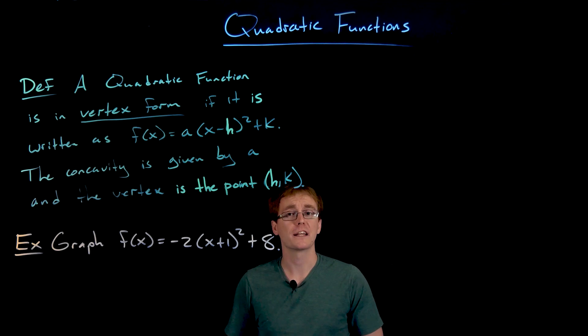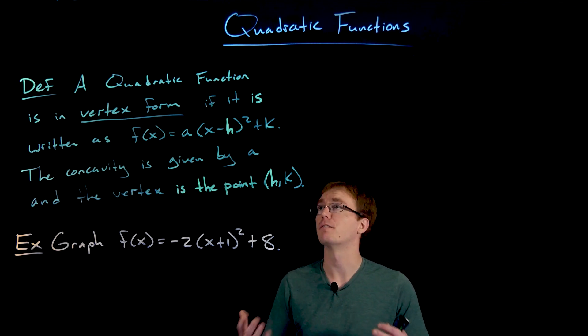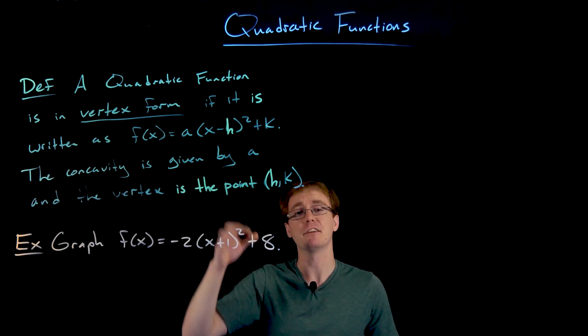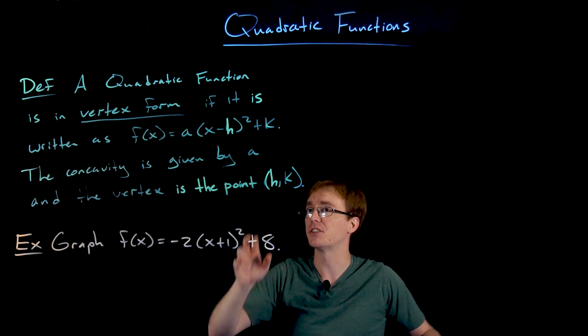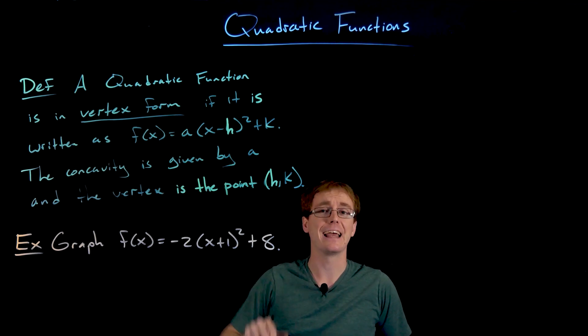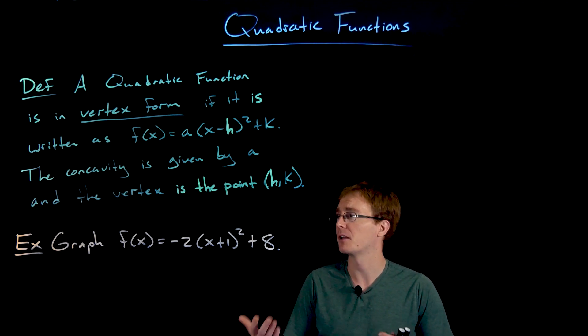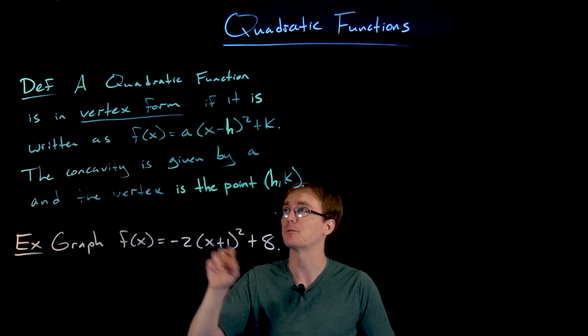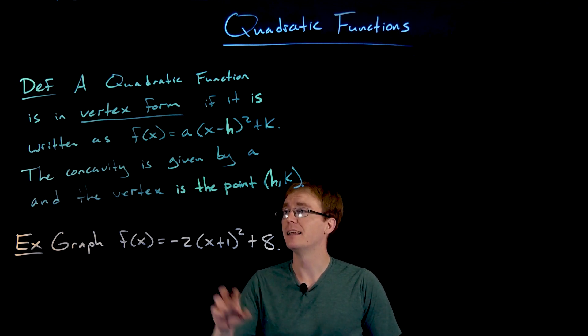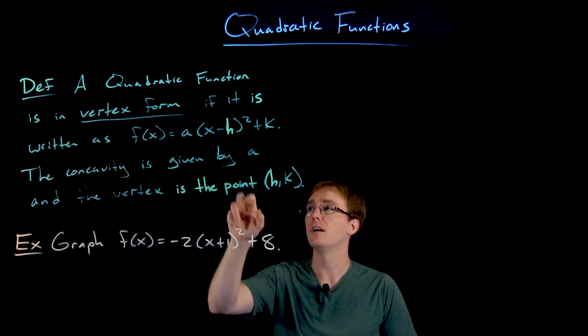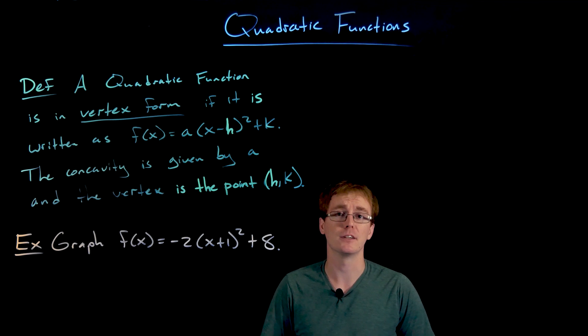If our quadratic function is written in this special vertex form, the concavity, whether it opens up or down, is still going to be given by a. That a is the same a as it was in our general form or standard form ax² + bx + c. But what's special about this vertex form is that we can read from it right away what the vertex of our parabola is going to be.